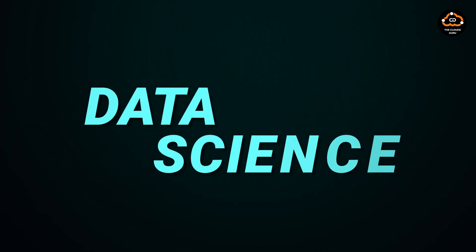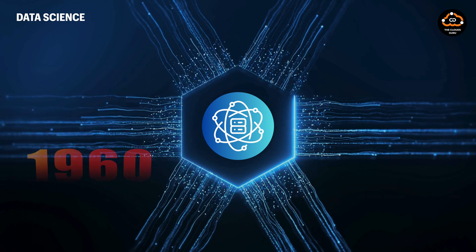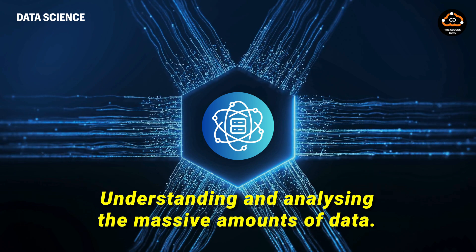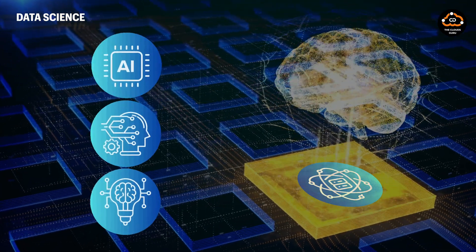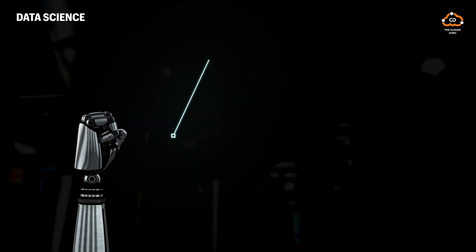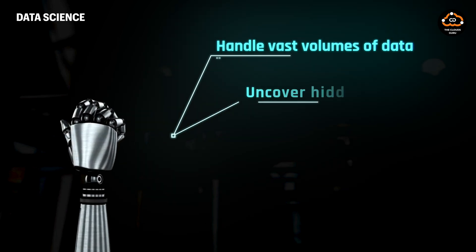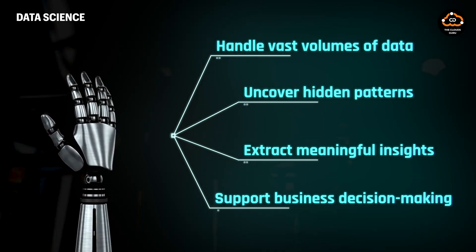Finally, let's discuss data science. Data science emerged in the early 1960s as a new profession aimed at understanding and analyzing the massive amounts of data being collected. It has since evolved, incorporating concepts from AI, machine learning, and deep learning. Data science involves using modern tools and techniques to handle vast volumes of data, uncover hidden patterns, extract meaningful insights, and support business decision-making.